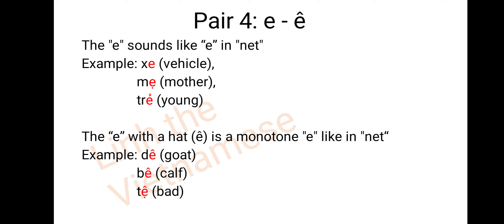Pair 4: E and Ê with a head. The E sounds like 'A' in English. For example: xe, mẹ, trẻ. The Ê with a head is a monotone sound, like the 'E' in English. For example: dê, bê, tệ.